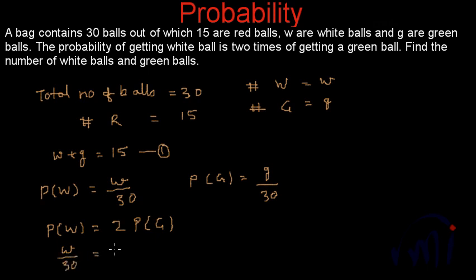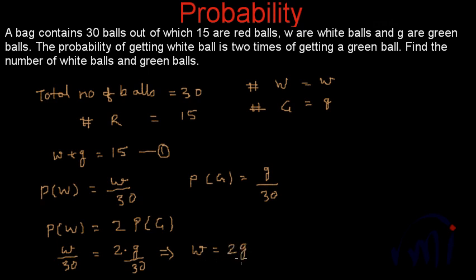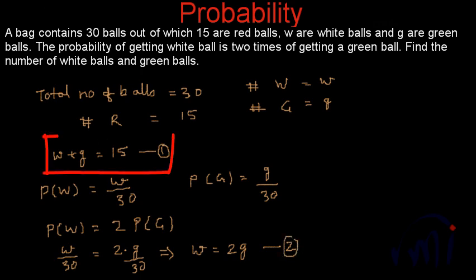So w/30 = 2 × (g/30), which simplifies to w = 2g. The total number of white balls is double the total number of green balls. Let us call this equation number two.